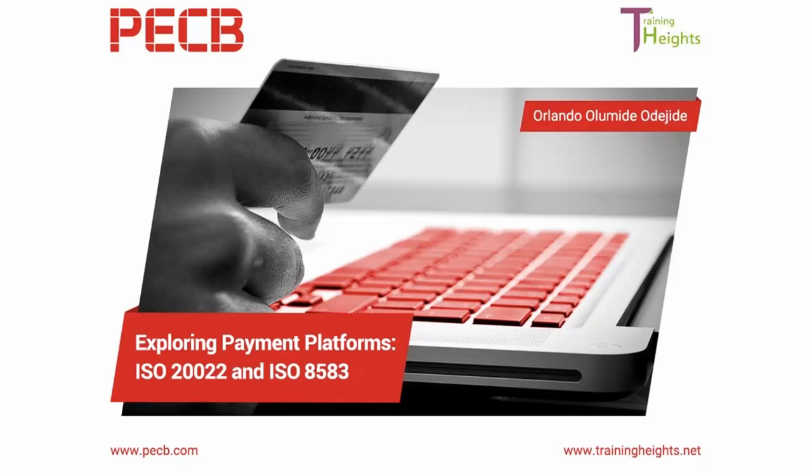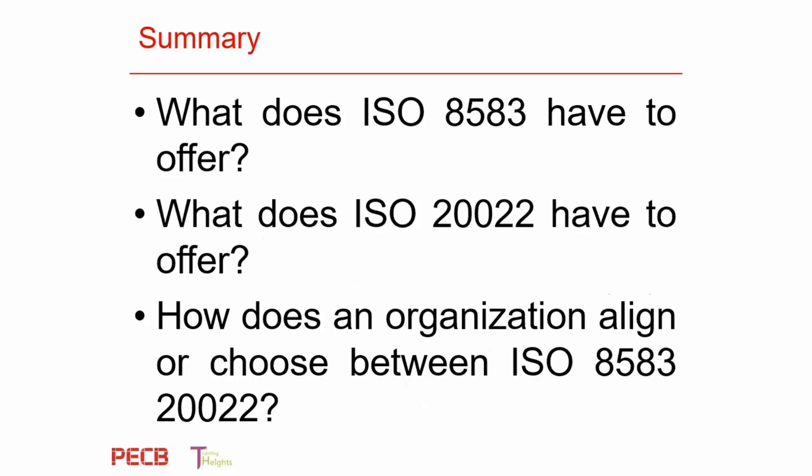So we'll be exploring ISO 20022 and ISO 8583. These are two great standards that a lot of international organizations use. We'll look at what each of them have to offer and what exactly a financial services company or a bank looking to standardize should consider — whether they should look at ISO 20022 or ISO 8583.